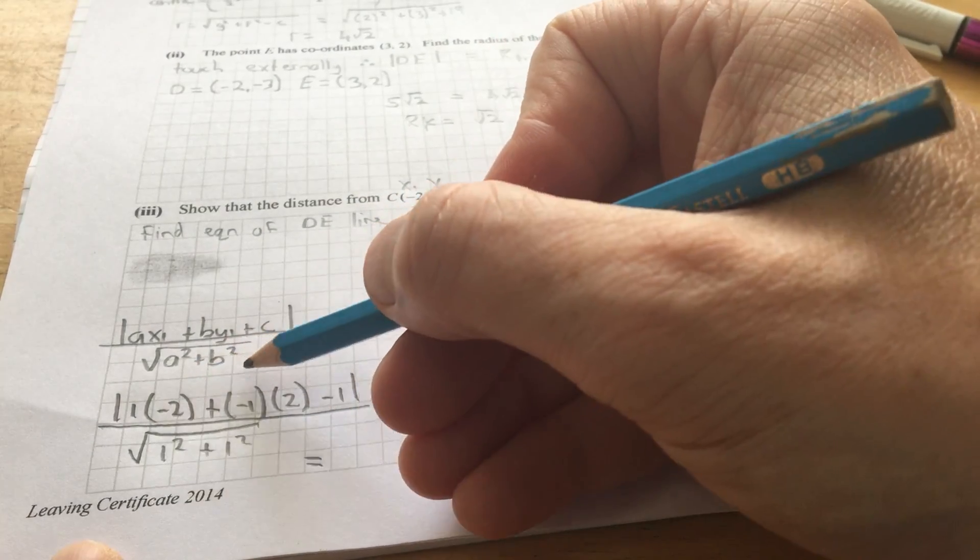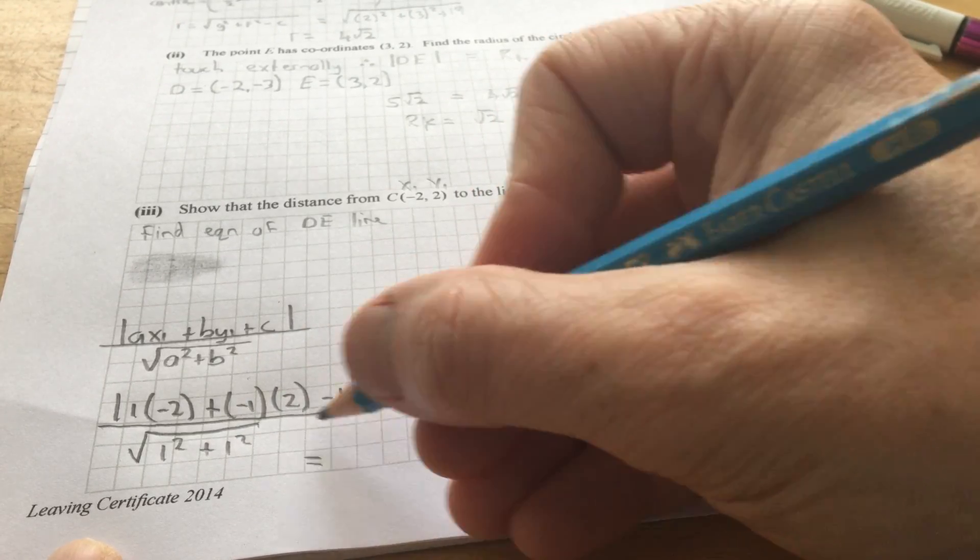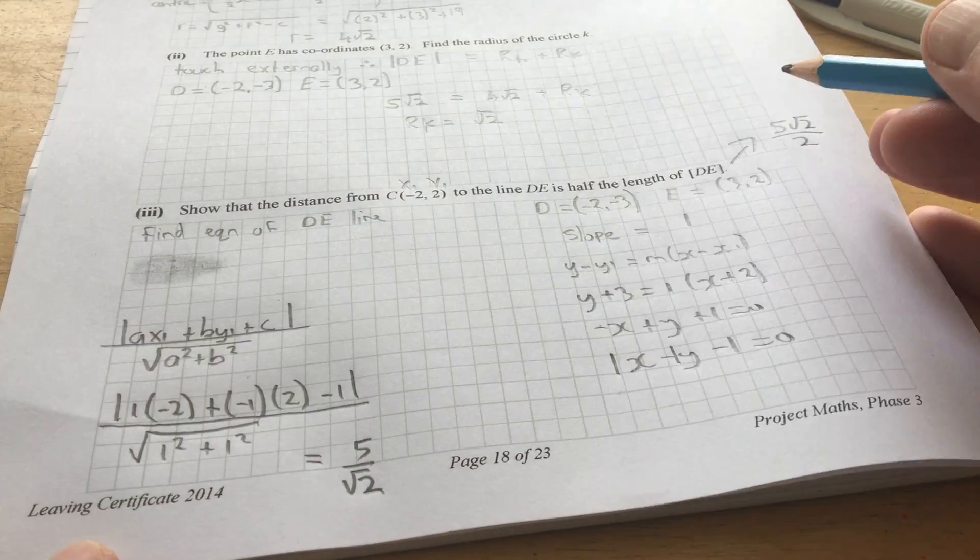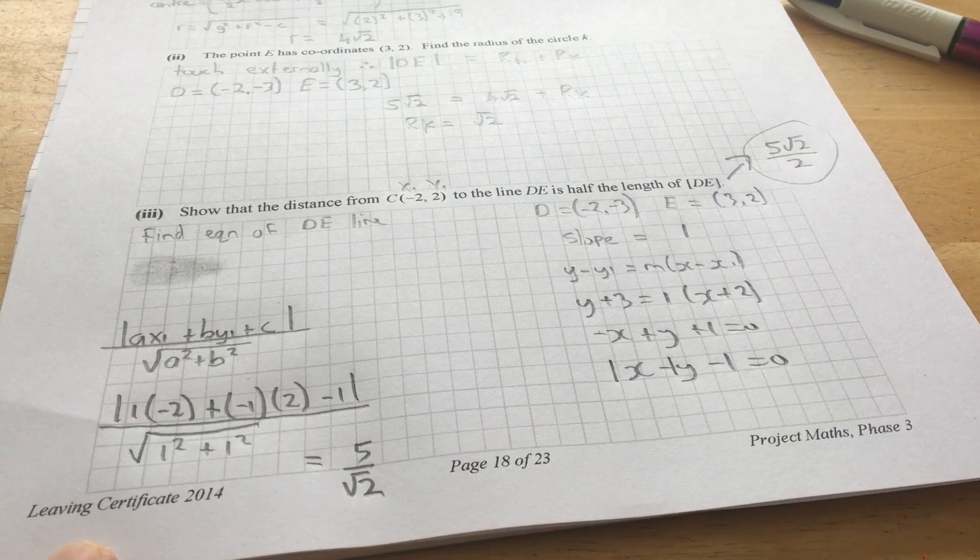So, just doing the top line, so you've got minus 2, minus 4. So, you've got minus 5. But, of course, it's the absolute value. So, it's 5 over root 2. Now, that's 5 over root 2. We set up here that the distance was supposed to be 5 root 2 over 2.